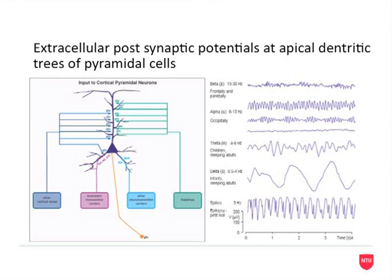As those inhibitory functions become stronger — for example, as we drift to sleep — the electrical function in the brain becomes much more synchronised and slower. We move from beta activity through to synchronised alpha and highly synchronised theta and delta activity. This actually characterises sleep; this is how we drift to sleep.